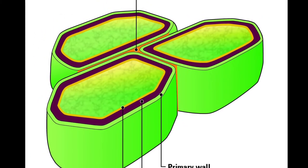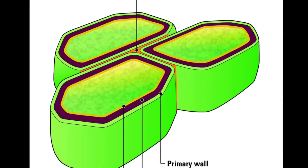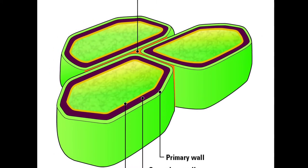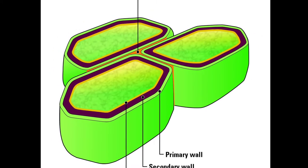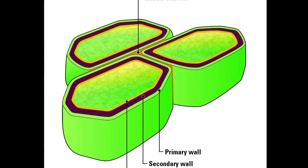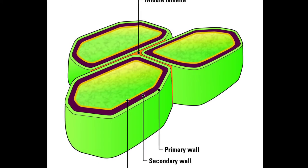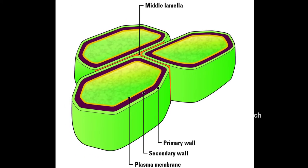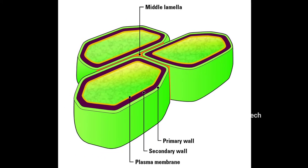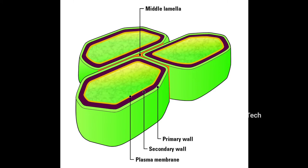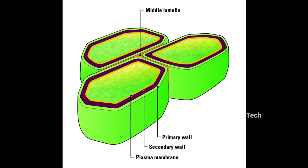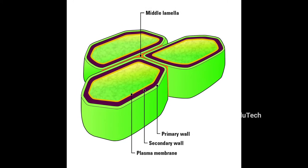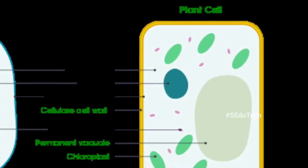Cell wall anedi mana first part, and the rigid outermost layer of the plant cell. Cell wall anedi mana ki mechanical support isthundi. Adhi mana ki protection isthundi. Animal cell loo manki cell wall anedi undadu.